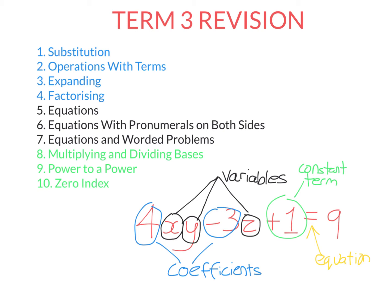We're going to start with some definitions. Each of these things here — 4xy, negative 3z, and plus 1 — they are called terms. When you have a whole heap of terms separated by plus and minus signs, we call that an expression. If you have an equal sign, it becomes an equation. The letters are called pronumerals or variables, because their value varies from question to question, and the number in front of those letters is called a coefficient. If you see a term that does not have any variables — no letters, a number by itself — we call that a constant term.